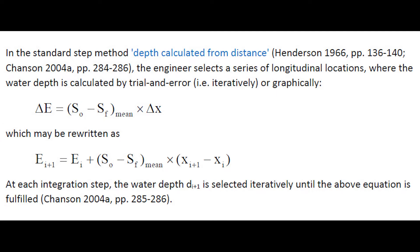In the standard step method, depth calculated from distance, the engineer selects a series of longitudinal locations where the water depth is calculated by trial and error iteratively or graphically. At each integration step, the water depth is selected iteratively until the above equation is fulfilled.